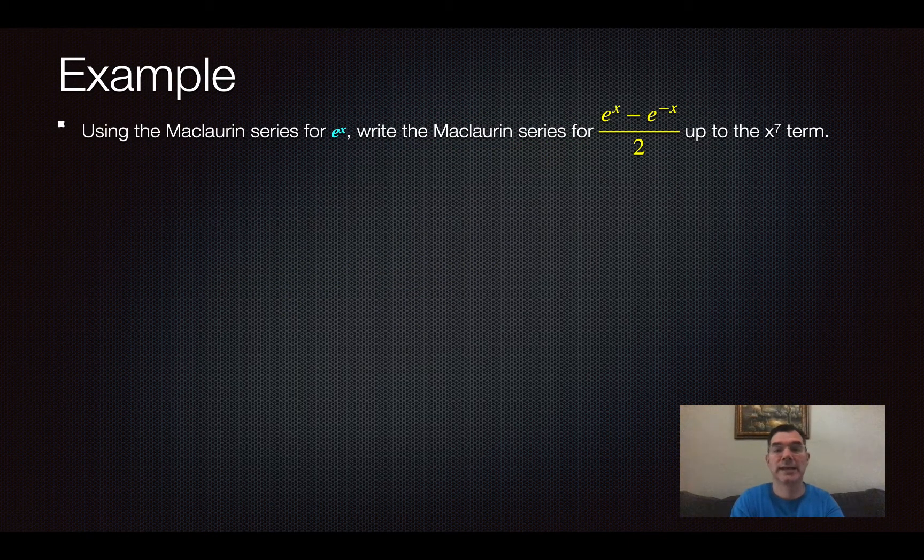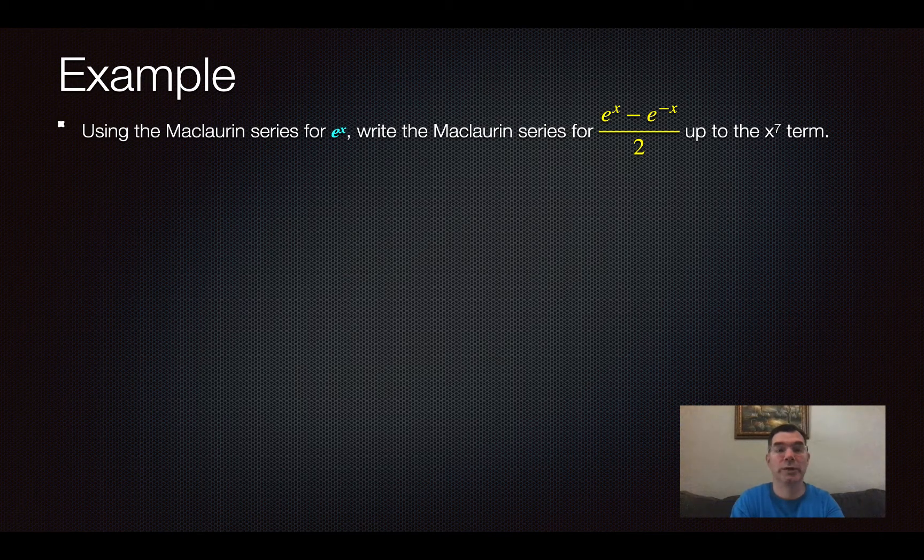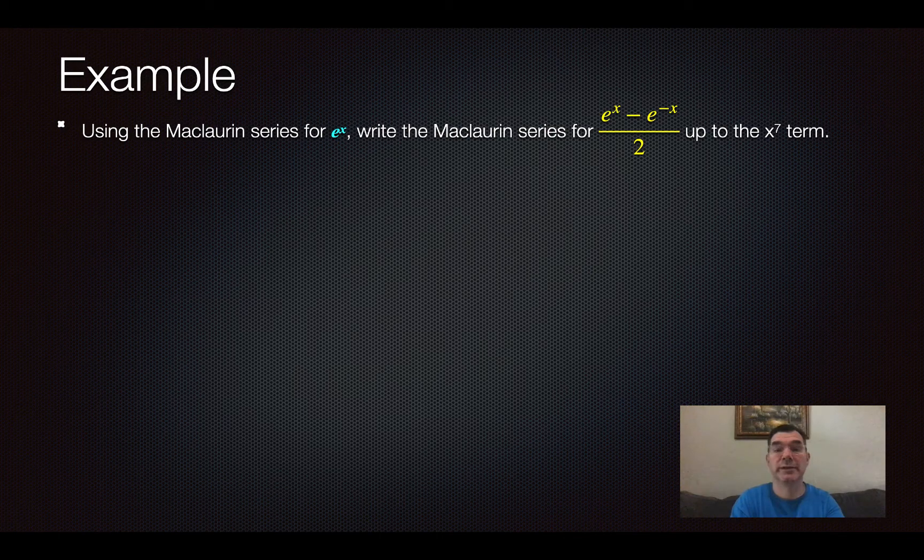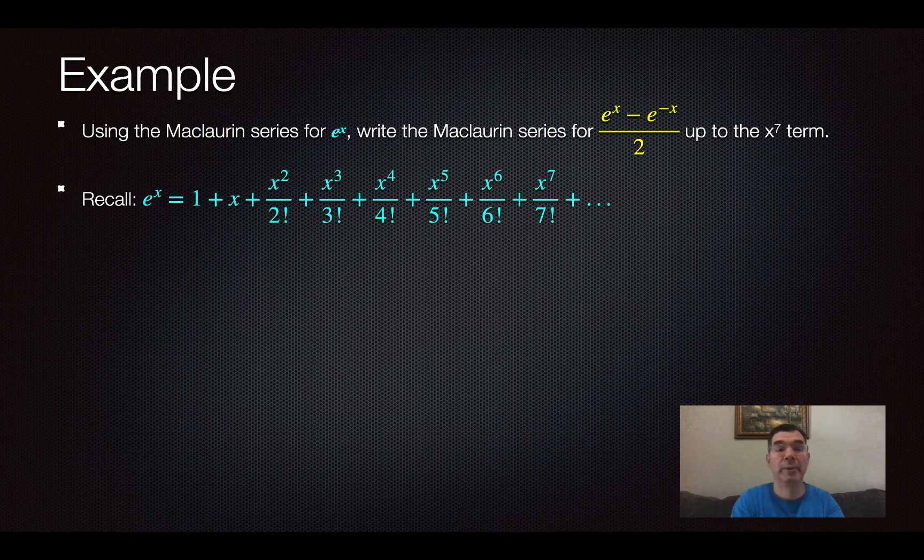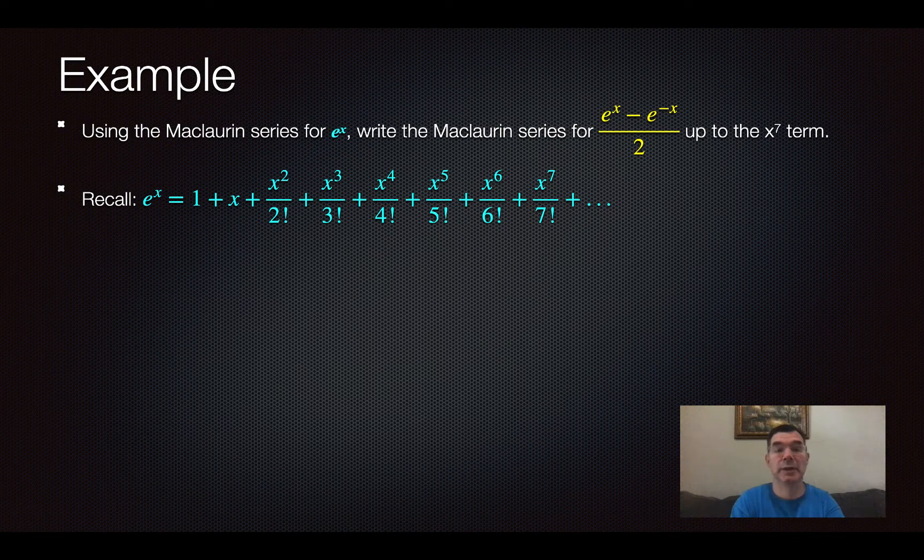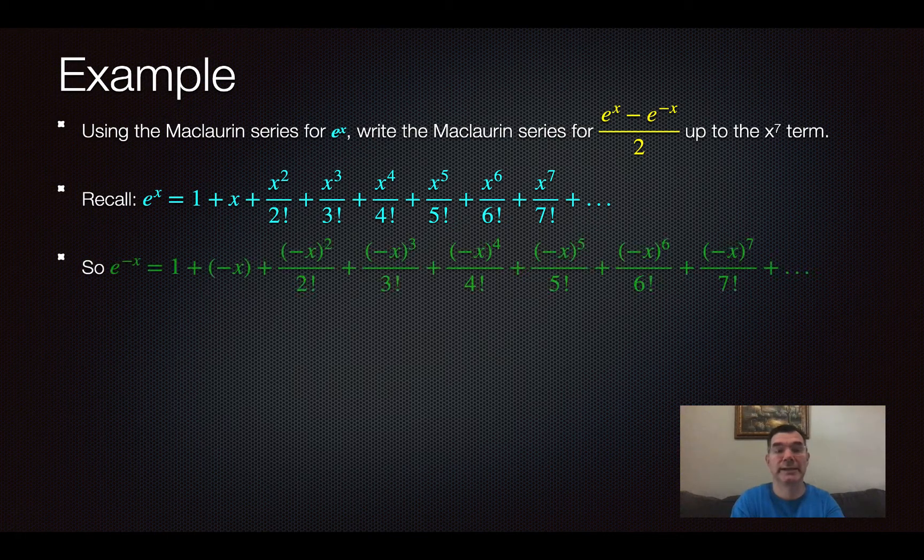And so our second and final example is we're going to use the Maclaurin series for e to the x, and we're going to write a Maclaurin series for e to the x minus e to the negative x all over 2 up to the x to the 7 term. So remember, e to the x is 1 plus x plus all of those other terms, that's the pattern. And again, I've stopped at the x to the 7 term because that's as far as I need to go.